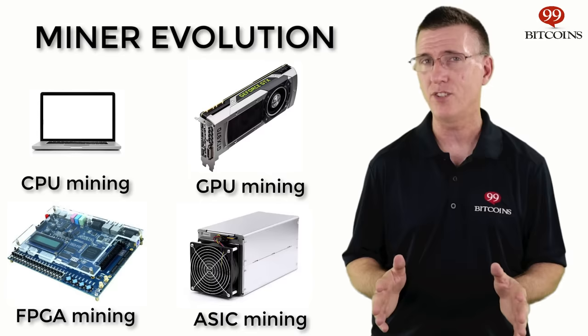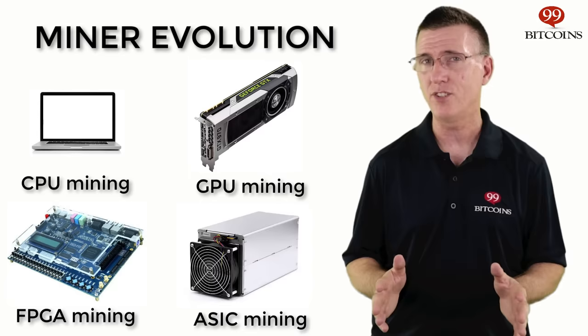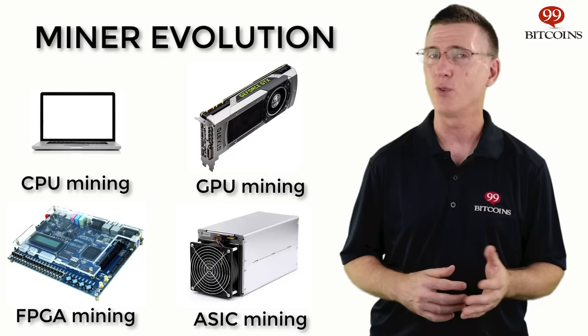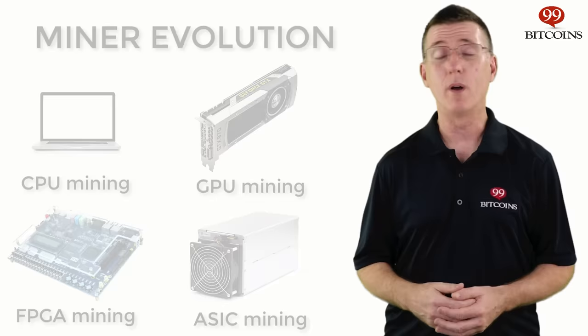Some early ASIC miners even appeared in the form of a USB, but they became obsolete rather quickly. Even though they started out in 2013, the technology quickly evolved and new, more powerful miners were coming out every six months. After about three years of this tech race, we finally reached a technological barrier and things cooled down. Since 2016, the pace at which new miners are released has slowed considerably.